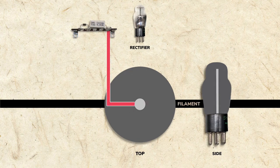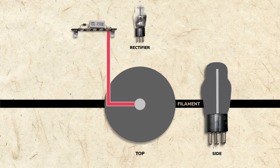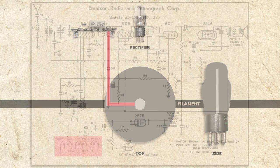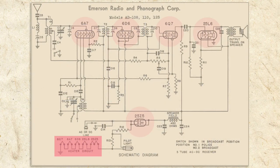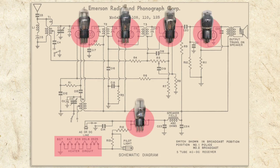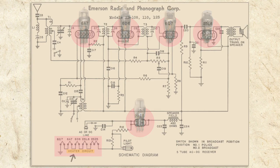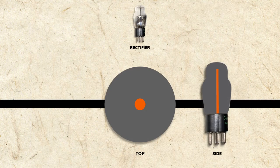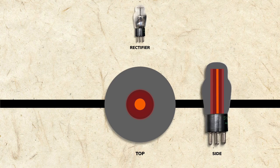The filaments in each tube are powered by the resistance cord replacement circuit. On our schematic, filaments are shown separately from the other tube elements, even though they're all contained in the same glass enclosures. Filaments are sometimes called heaters because it's their job to get hot and heat the nearby cathode.